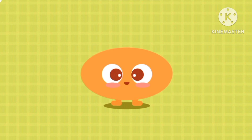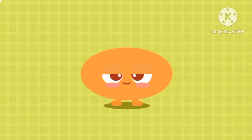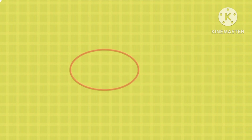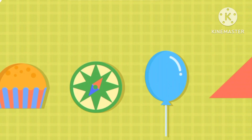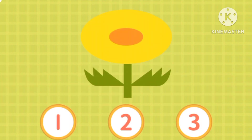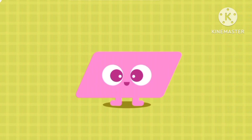There is one. This is an oval. These are oval friends. Can you spot them? It's the balloon. How many are there? There are only two. This is a parallelogram.